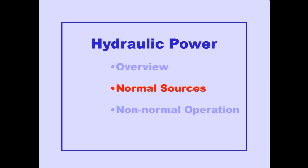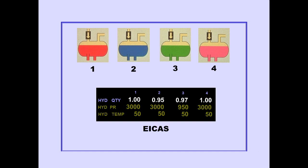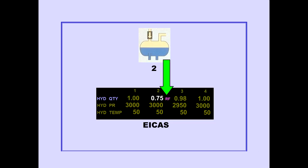We will now discuss the normal sources of hydraulic power. Each system has its own independent reservoir. The quantity in each reservoir is indicated on the ICAST status display. A value of 1.00 is the normal service level; the value displayed is a percentage of full. When the reservoir quantity is at or below the refill level, the letters RF appear next to the quantity. This condition requires maintenance action prior to flight.